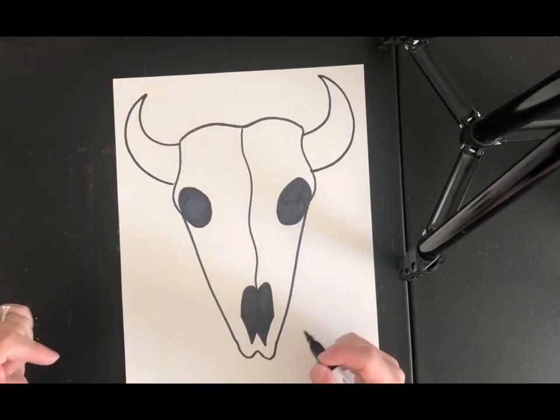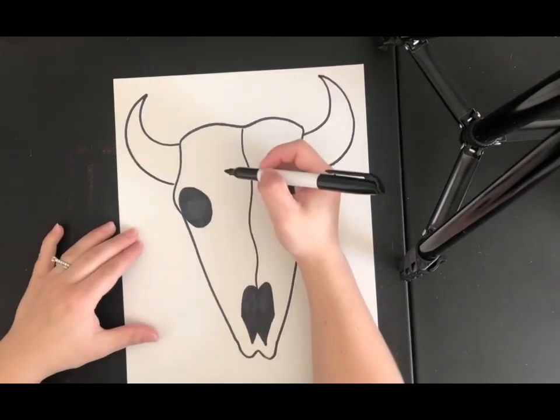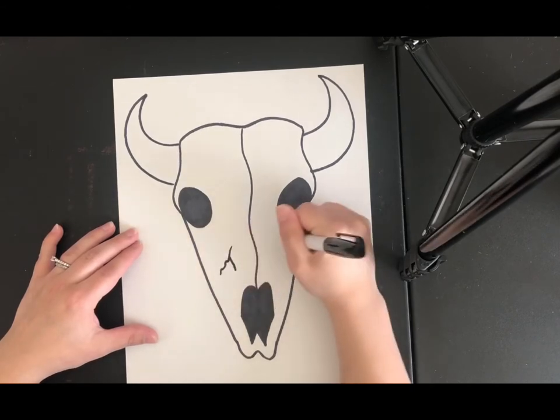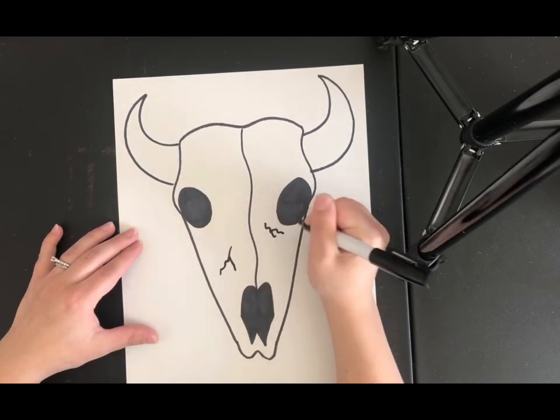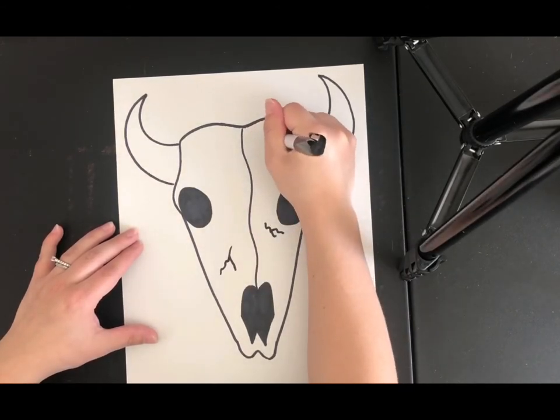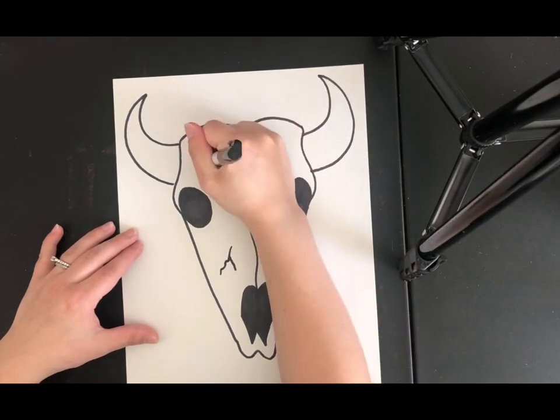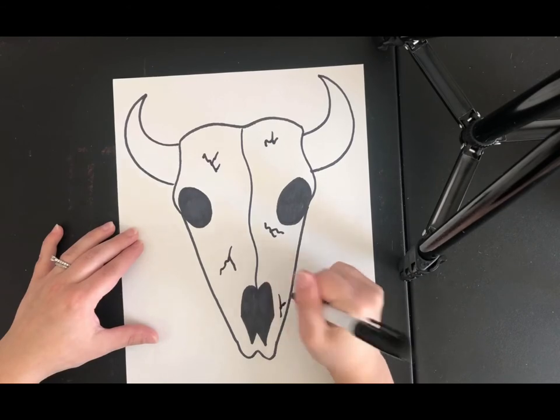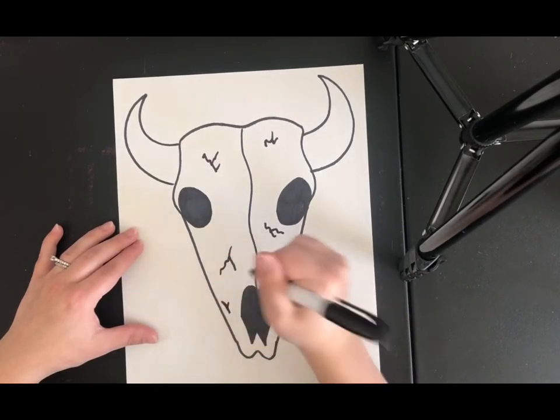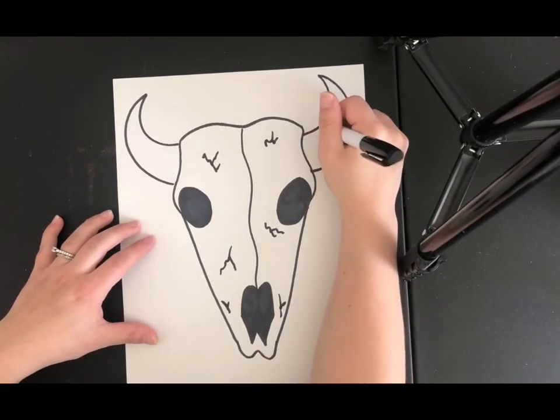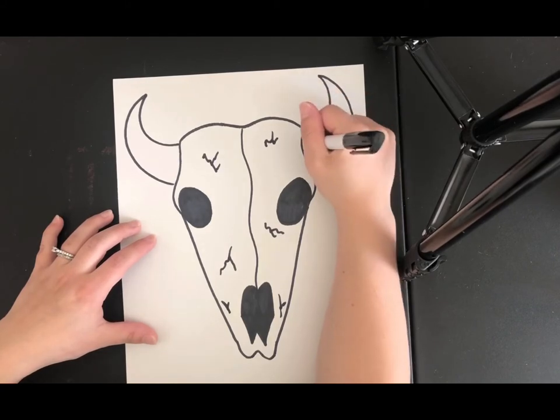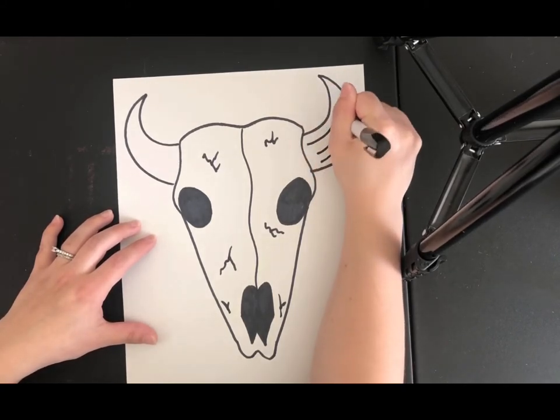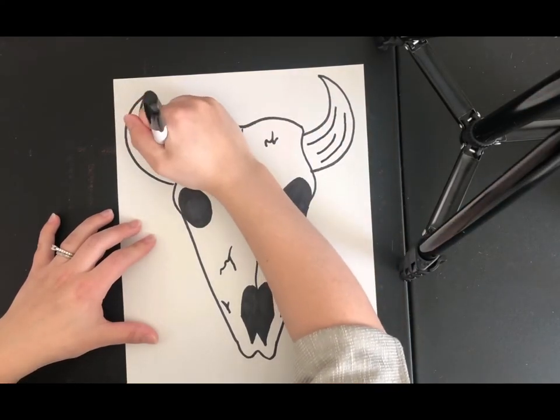You can create some texture in your skull because often there are little cracks and stuff. So if you want, using just some wiggly lines, add some of those cracks here and there and this just gives your skull a little bit more texture. Same thing you could add some cracks and lines to your horns to give it some texture.